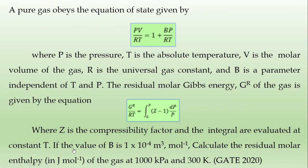If the value of B is 1 × 10⁻⁴ m³/mol, calculate the residual molar enthalpy of the gas in J/mol at 1000 kPa and 300 K. Now let us solve the problem.